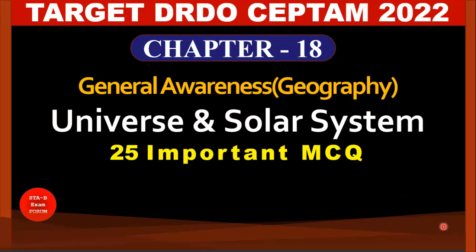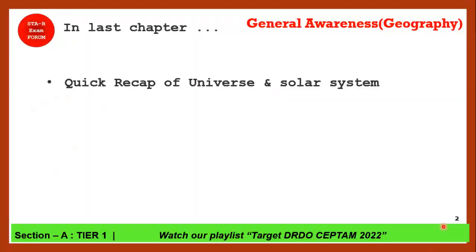Welcome to STB Exam Forum. We have come up with another video on General Awareness. In this video we are going to see Universe and Solar System — 25 important MCQs. In the last chapter we did a quick revision of this topic using a concept map, and in this video we will reinforce that knowledge. These 25 MCQs are very important from the DRDO exam perspective.